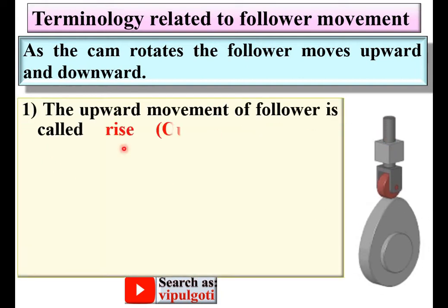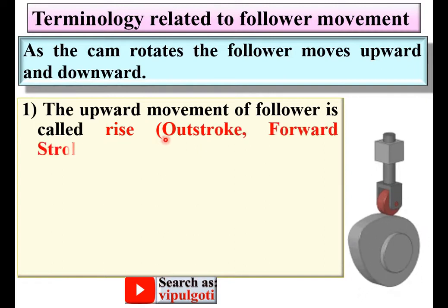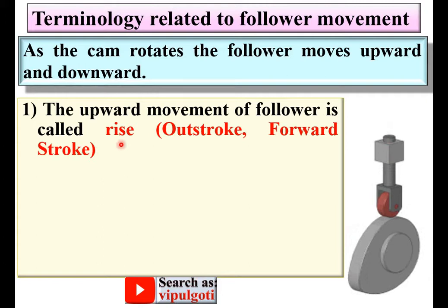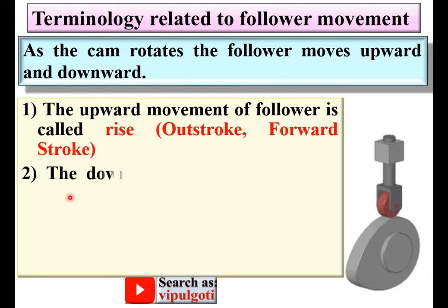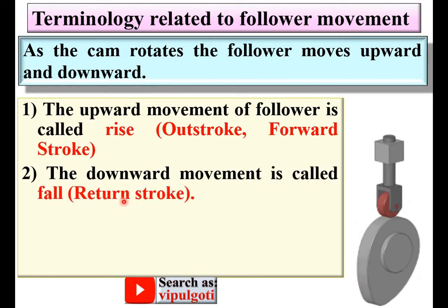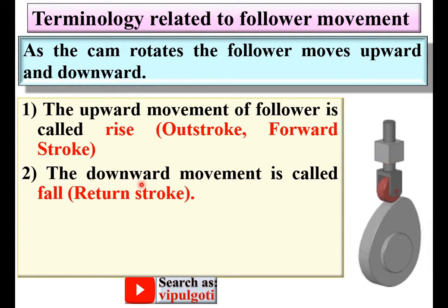The upward movement of the follower is called rise — sometimes called outstroke or forward stroke. The downward movement is called fall or return stroke. Here you can see the downward movement of the follower, known as the fall or return stroke.